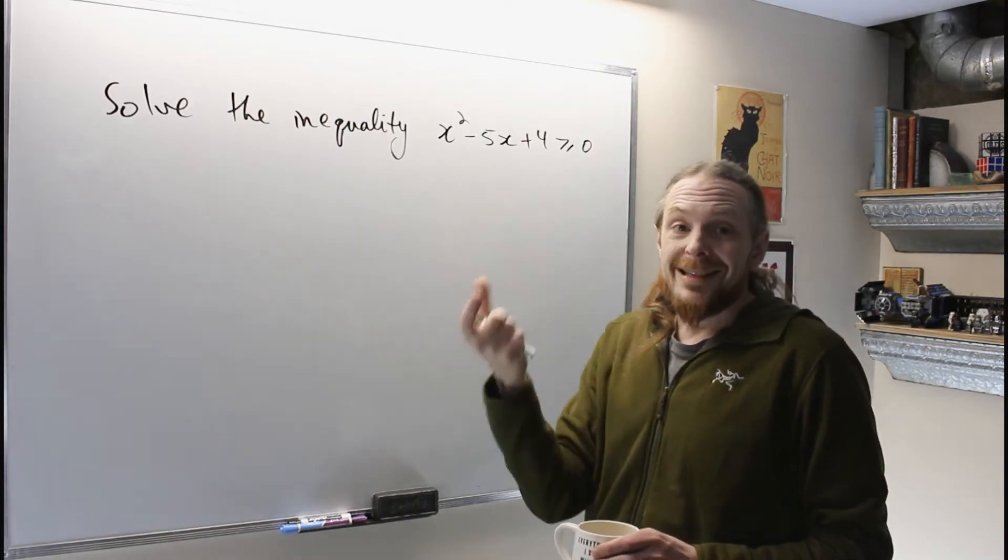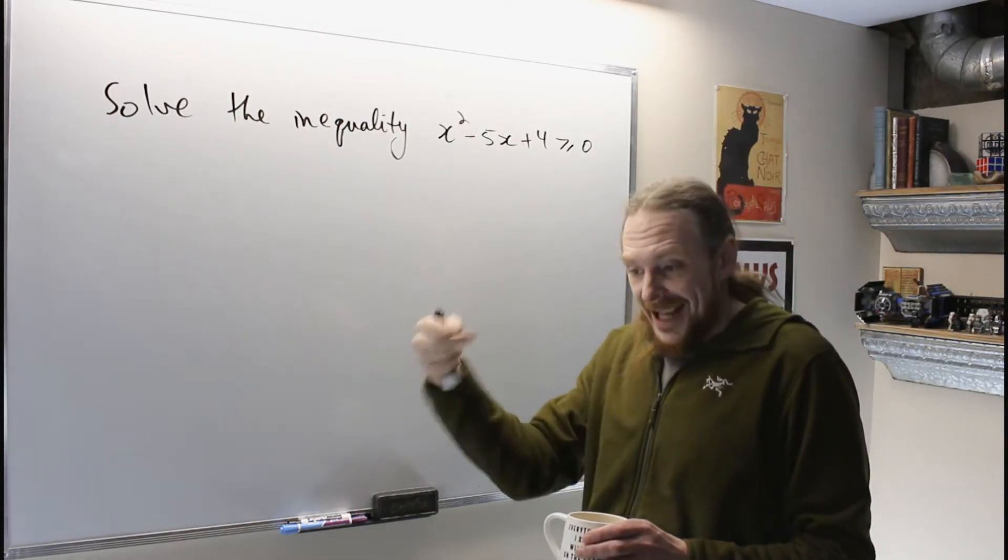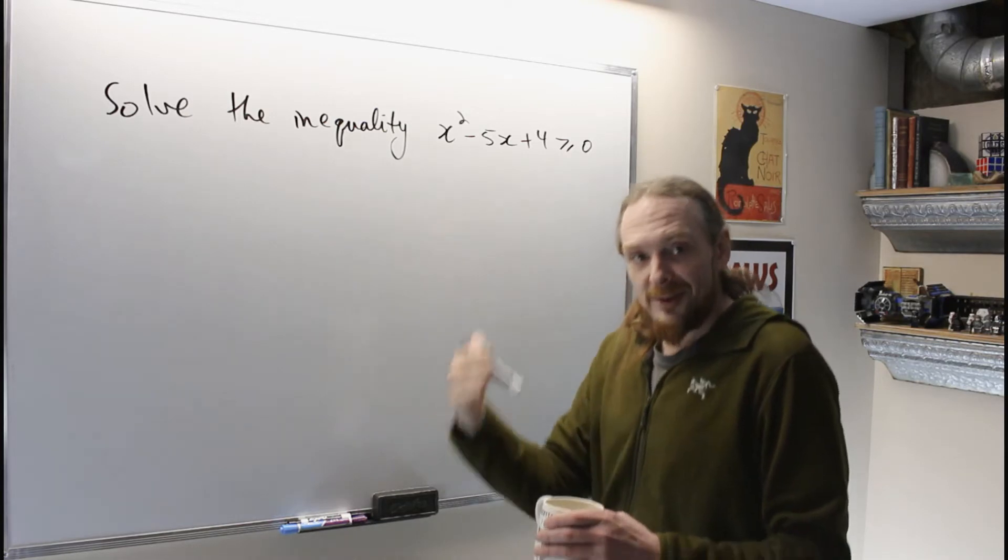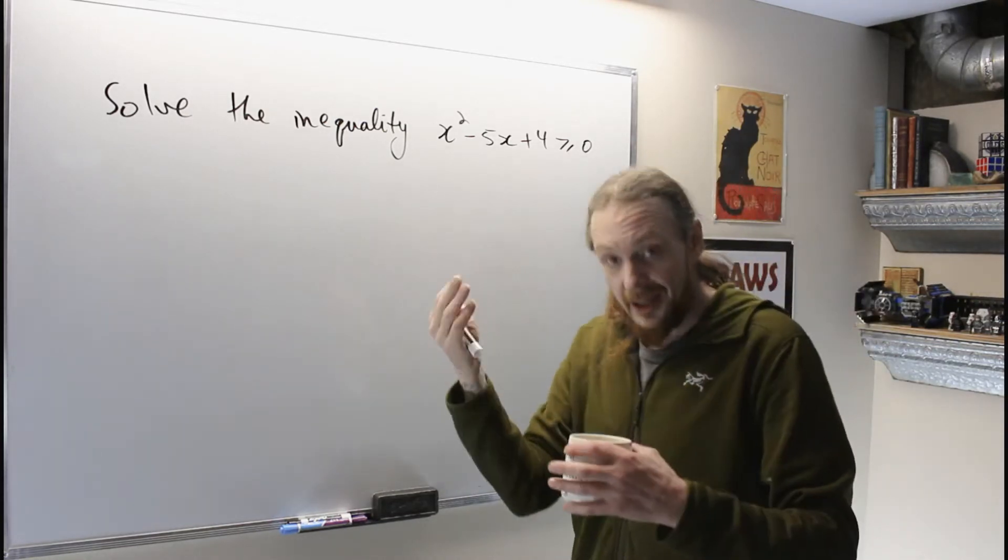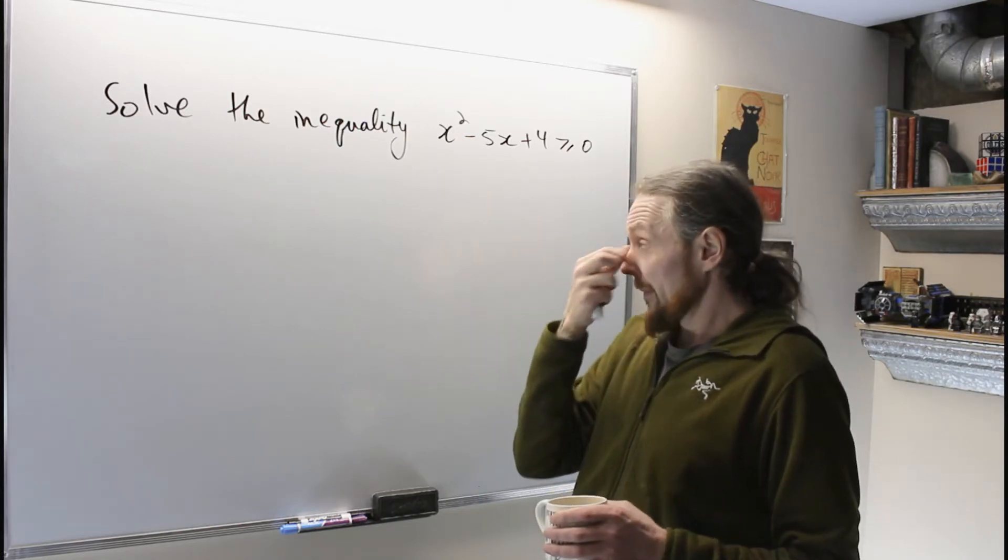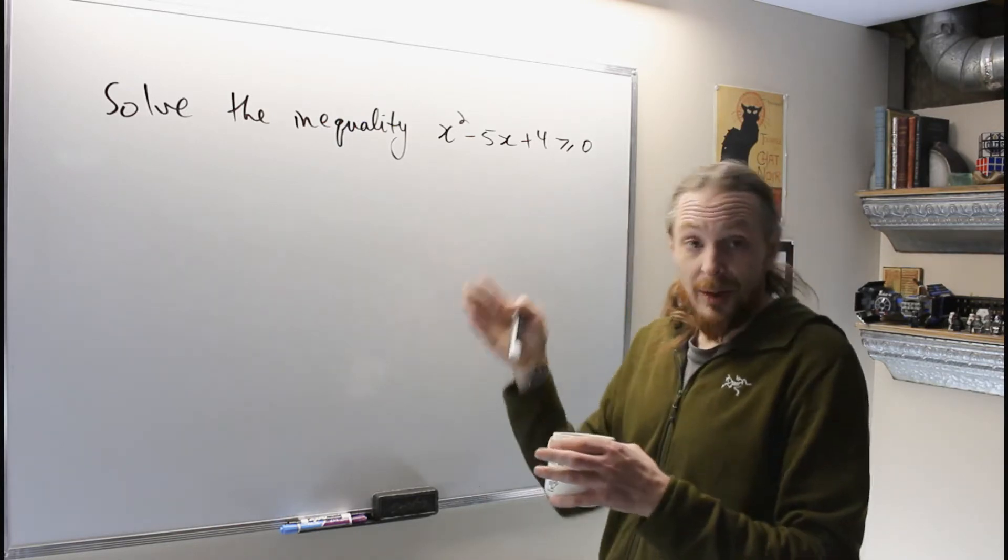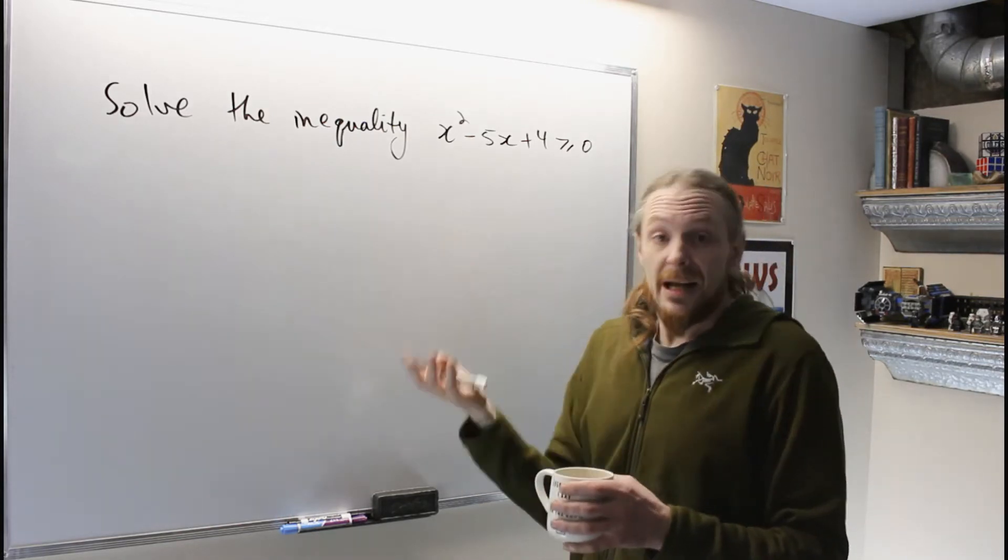We try to break that into its linear factors, then we make a table of when all the linear factors are positive or negative, we multiply those together to get the overall nonlinear term to find out when it's positive or negative, and then we can answer the question.